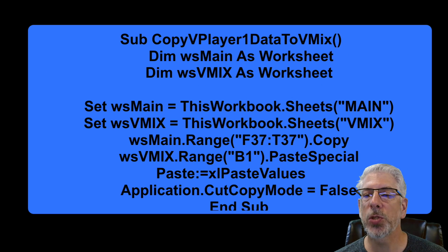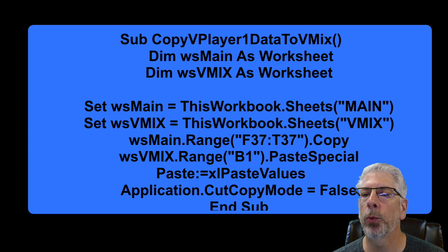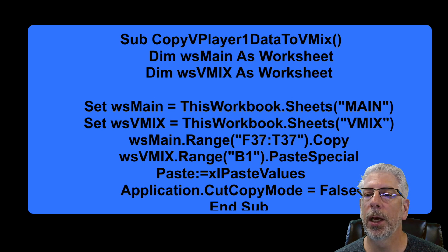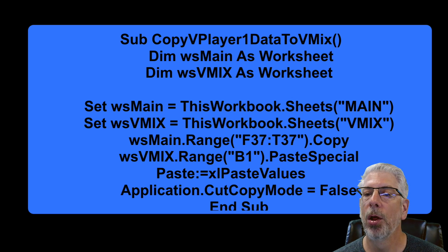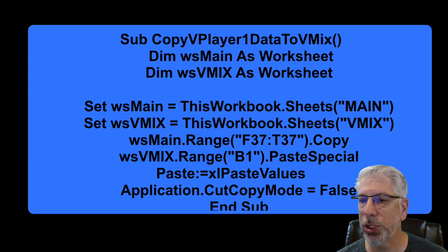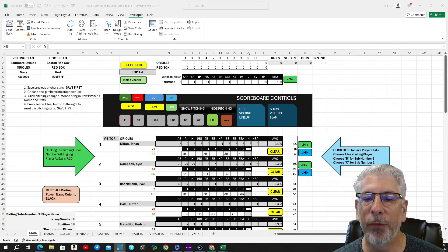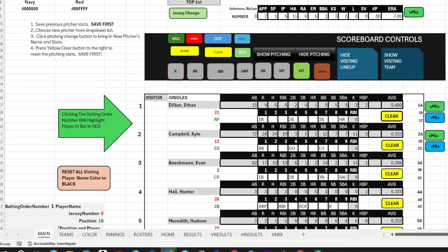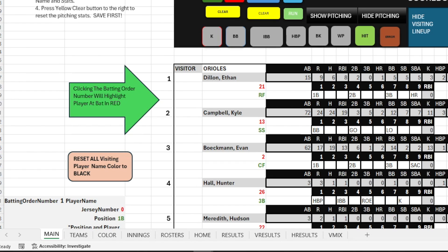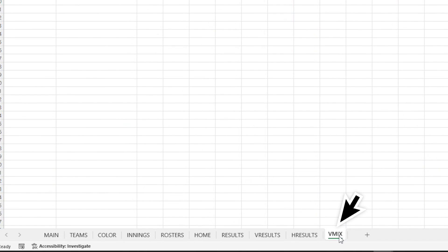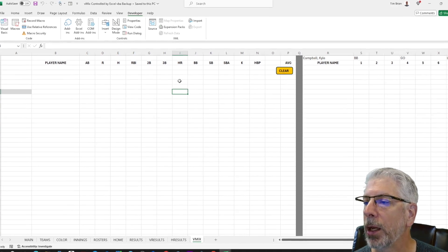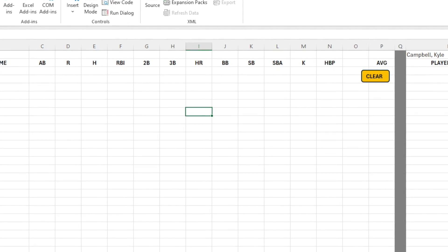The first part is our sub line — this is what we've titled this particular macro: 'Copy visiting player one data to vMix.' What we're declaring are worksheet main as a worksheet, and worksheet vMix as a worksheet. Let me show you where that information comes from. Down here at the very bottom are the names of the worksheets. We're going to be working with worksheet main and worksheet vMix. You can see there's no information in vMix yet because we haven't run the macro to bring the information into it.